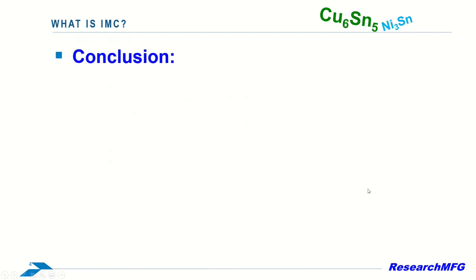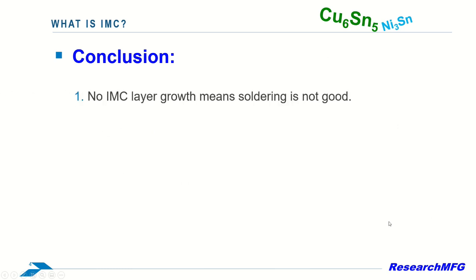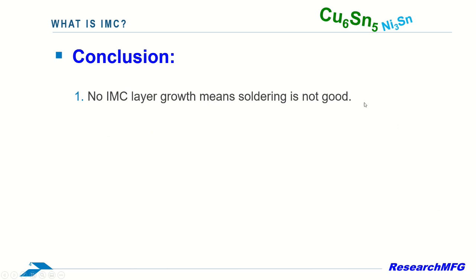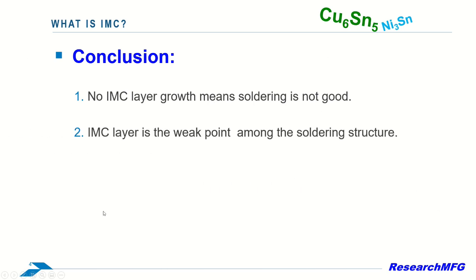Now we can draw some conclusions. First, lack of IMC layer growth indicates poor soldering quality. Second, IMC layers are the weak points within the soldering structure.